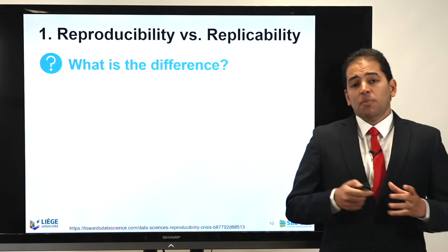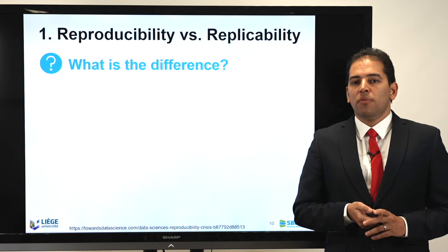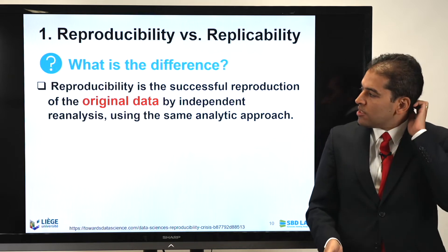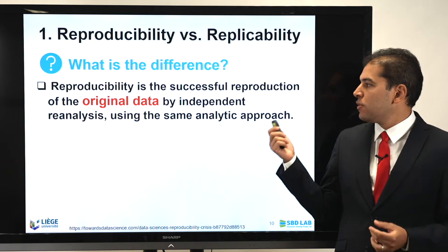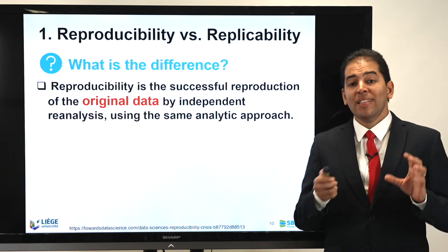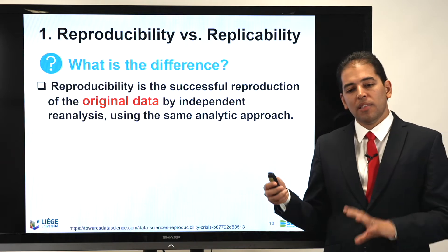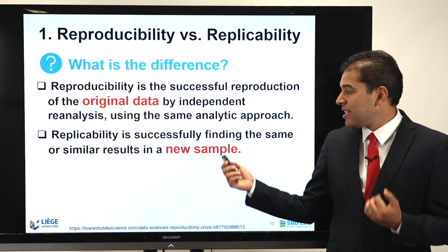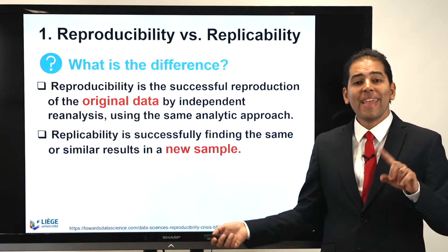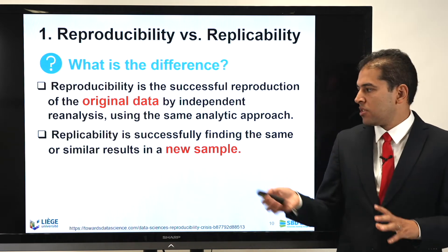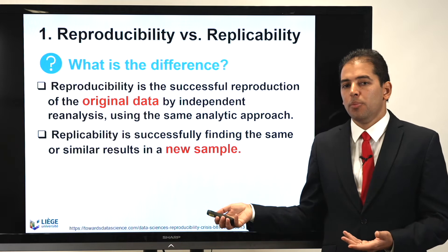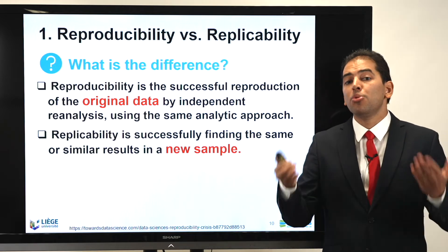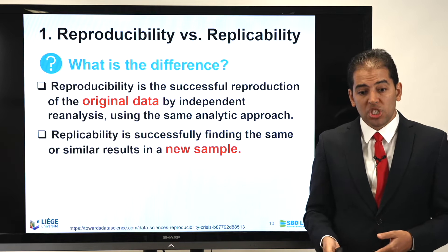Let me take you to another very important concept that many researchers get confused about: the difference between reproducibility and replicability. They are not the same. Reproducibility is the successful reproduction of the original data by independent reanalysis using the same analytical approach. Replicability, however, is successfully finding the same or similar result in a new sample. So the main difference is that replicability involves using a new sample with the same technique, while reproducibility is about reproducing the same work using the same original data.